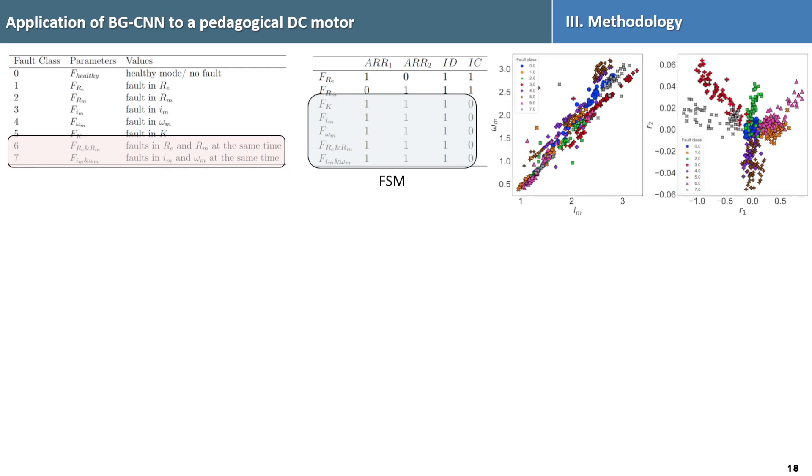A scatterplot analysis in sensor and residual space revealed the challenges in distinguishing fault classes in the sensor space, whereas the residual space shows already a clear separation without using any algorithm.